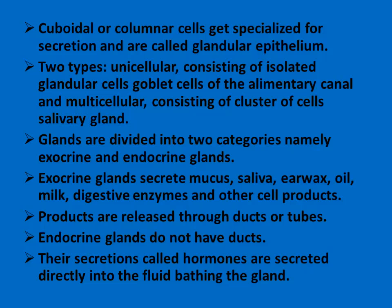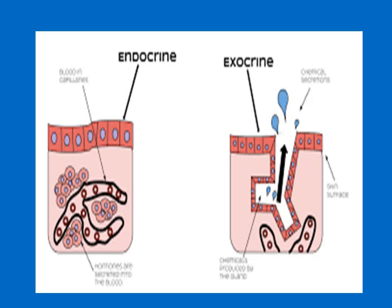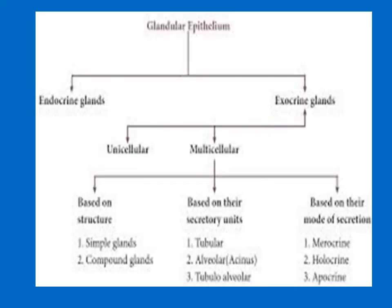Exocrine glands are duct glands — their products are released through a duct. Endocrine glands, on the other hand, do not have ducts; their secretions are called hormones and are directly poured into the bloodstream. This slide shows examples of both endocrine and exocrine glandular epithelium.